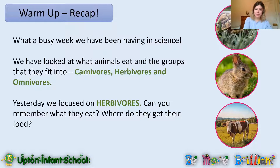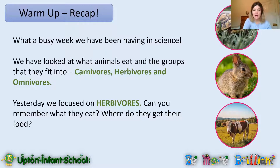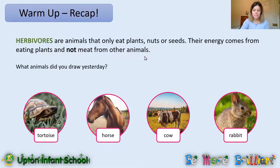So let's have a recap. We have been having such a busy week learning lots about what different types of animals eat and what categories they fit into. We've looked at carnivores and herbivores, and today we're going to look at omnivores. But yesterday we focused on herbivores — can you remember what herbivores eat? Herbivores are animals that only eat plants, nuts or seeds. Their energy comes from eating plants and not meat from other animals.